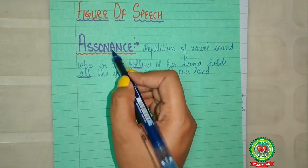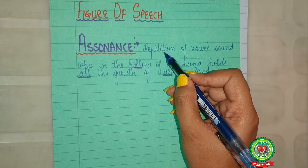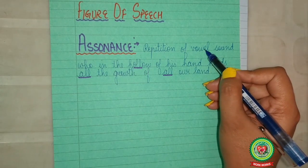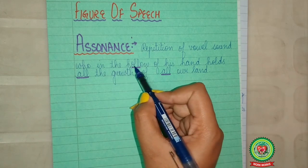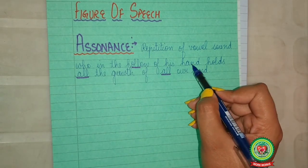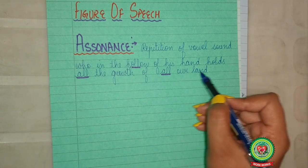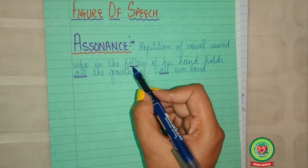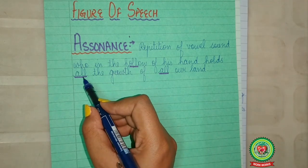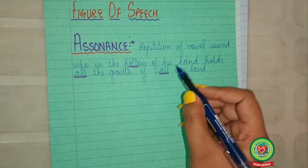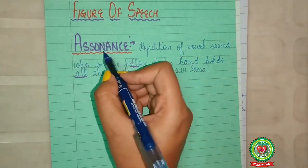The figure of speech used in stanza 3 is assonance. Assonance, as I have already told you, is the repetition of vowel sound. 'Who in the hollow of his hand holds all the growth of all our land?' Here, the 'all' of hollow, 'all' and 'all' is the repetition of vowel sound. So it is assonance.